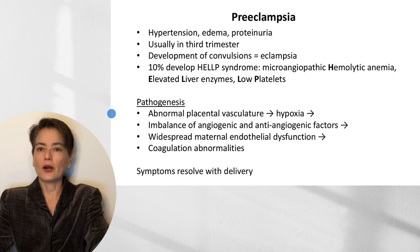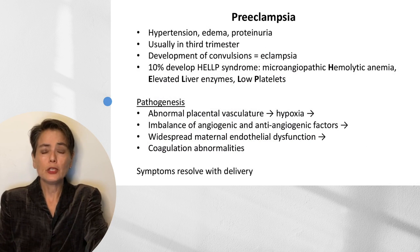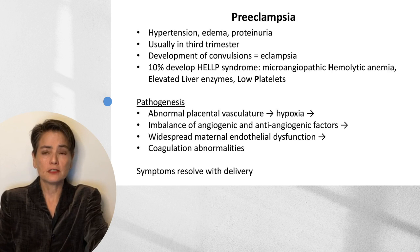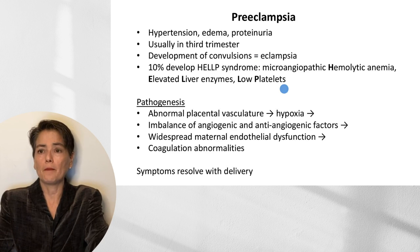This brings us to our digression on preeclampsia. Preeclampsia is characterized by hypertension, edema, and proteinuria, and usually presents in the third trimester. With progression and development of convulsions, it is referred to as eclampsia. About 10% of patients will develop HELLP syndrome, which involves microangiopathic hemolytic anemia, elevated liver enzymes, and low platelets.